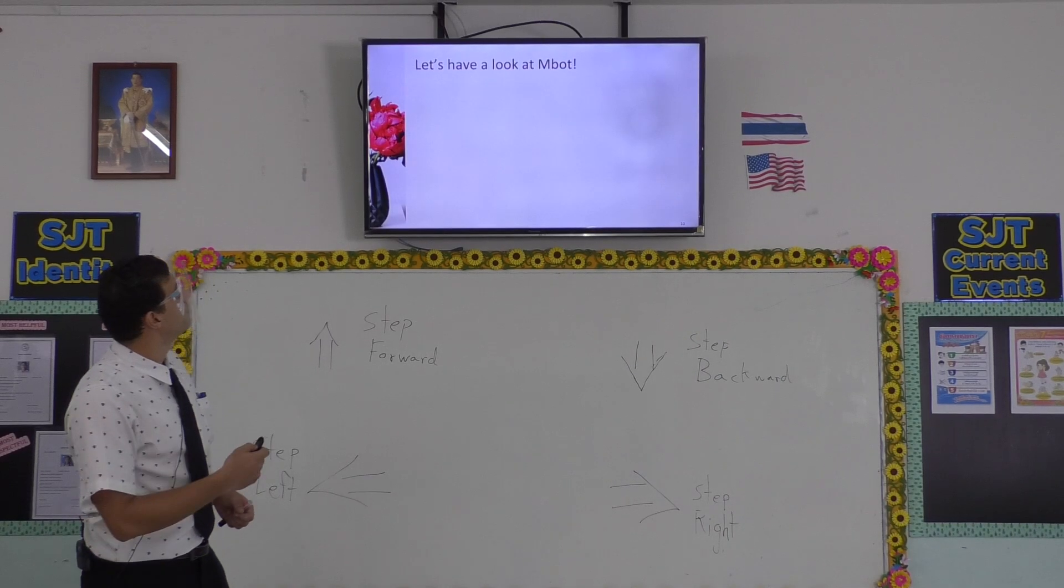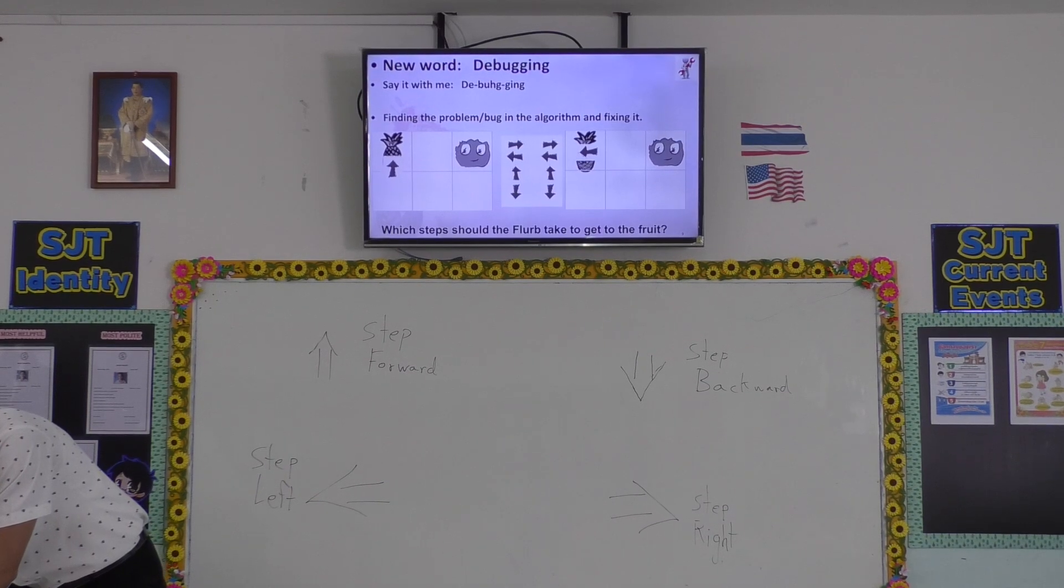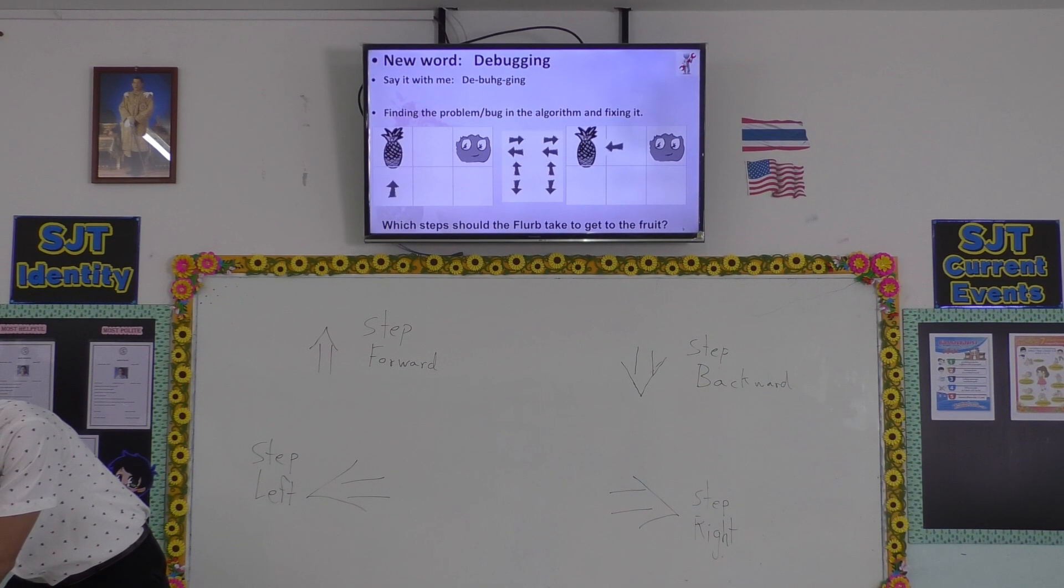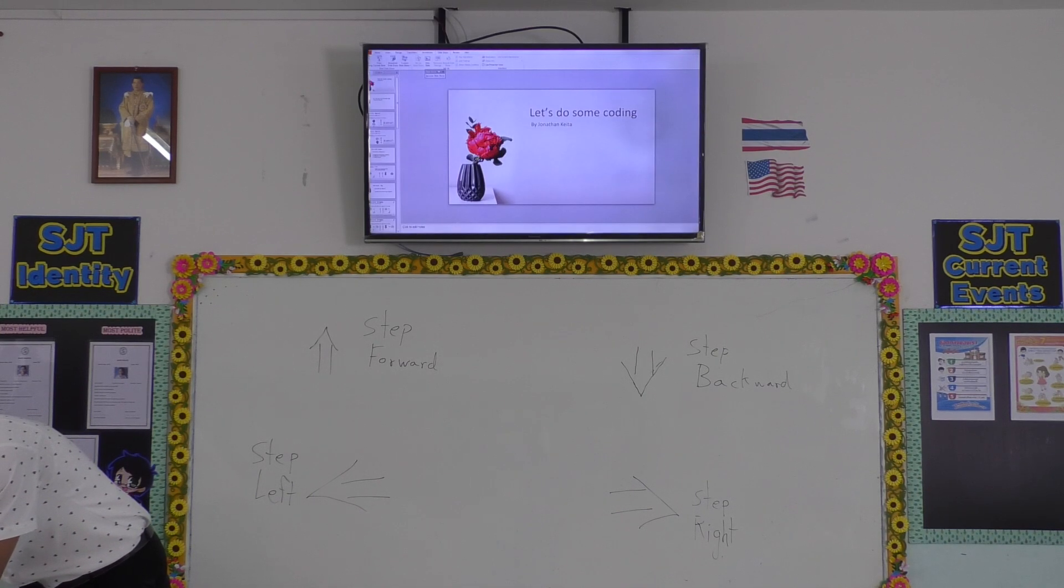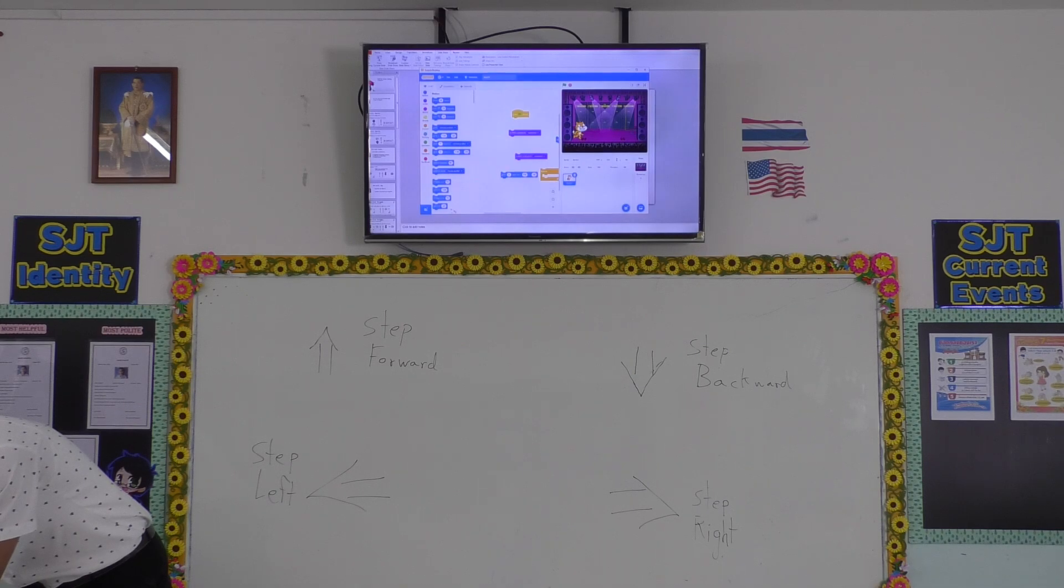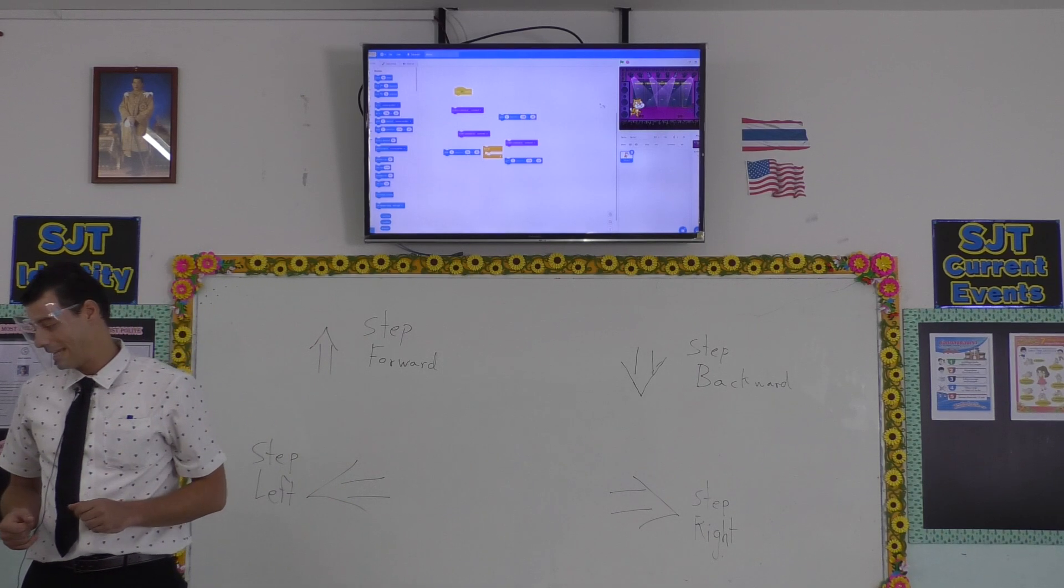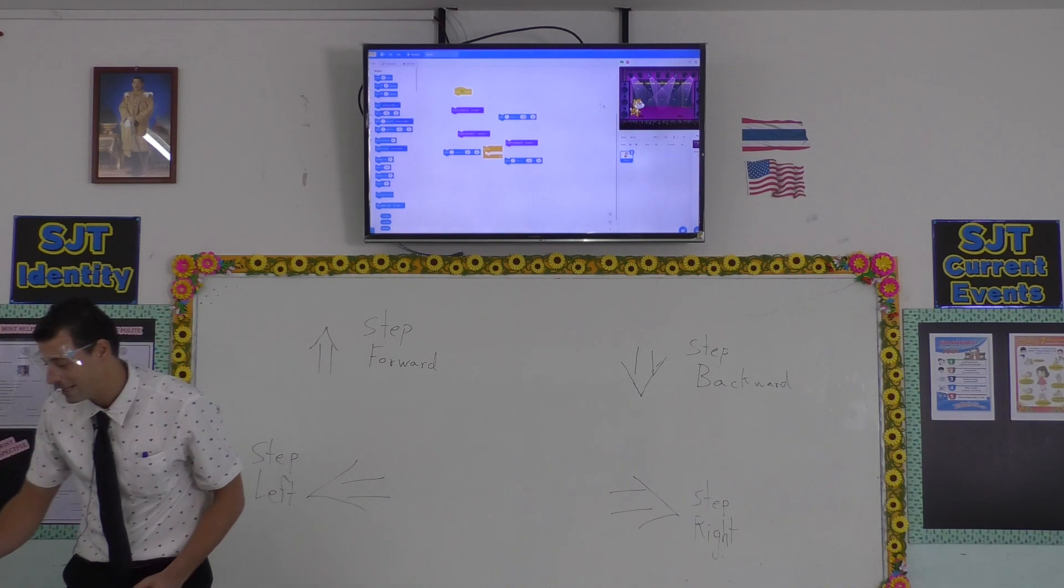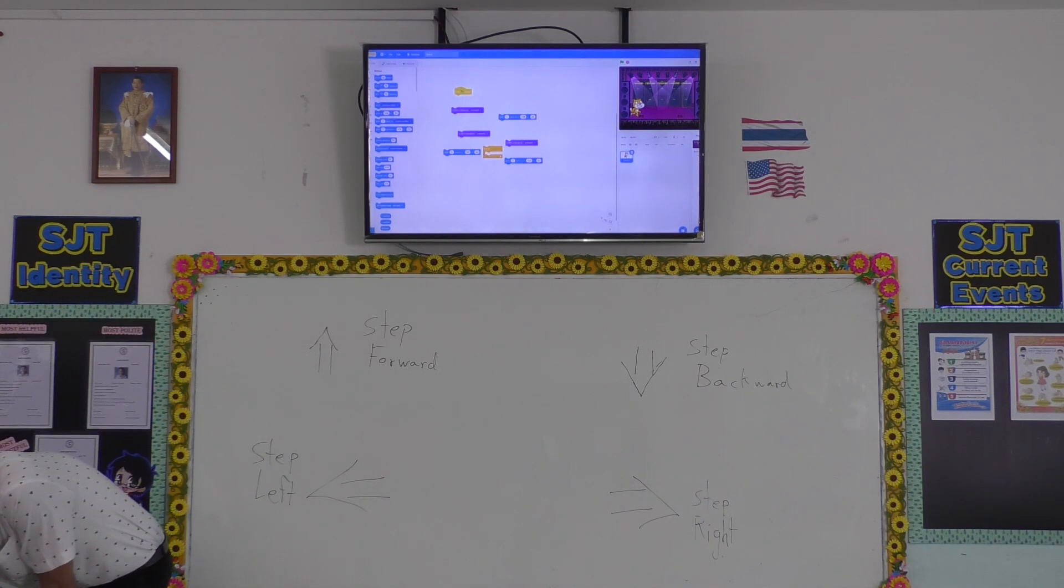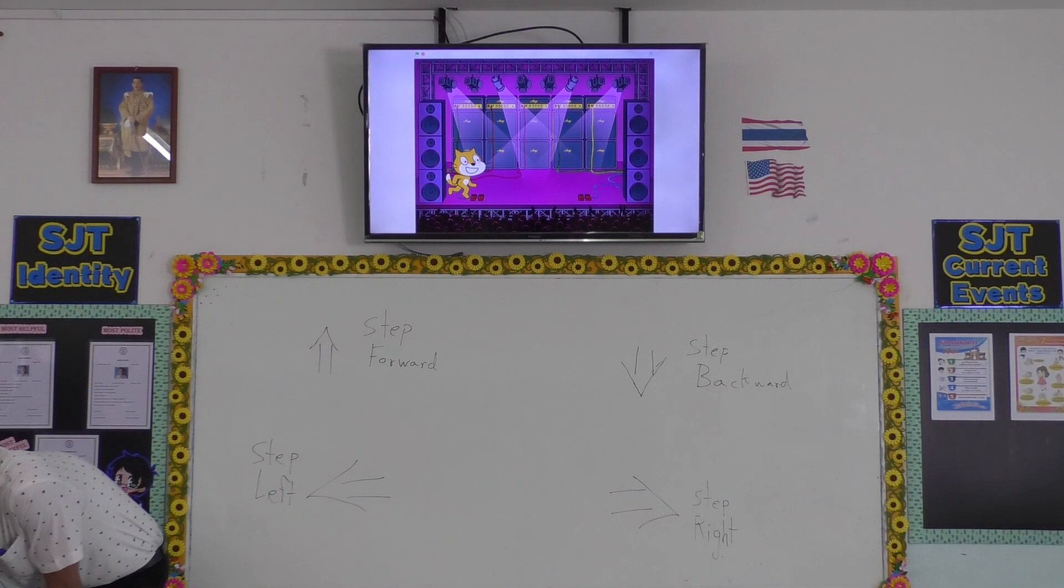Okay. All right. Let's have a look at how coding is done in a code block software. All right. So here we have code blocks. And on this screen, we have a sprite and a background.